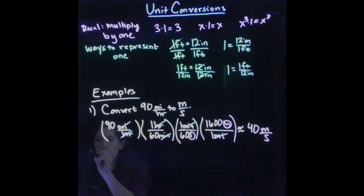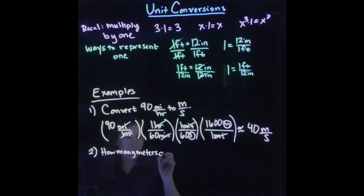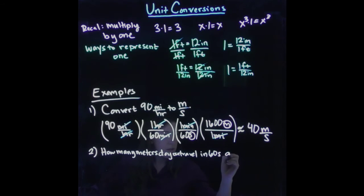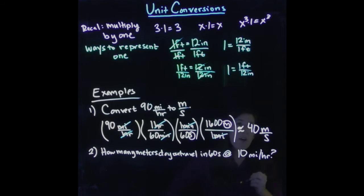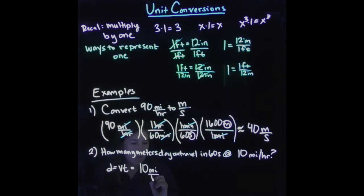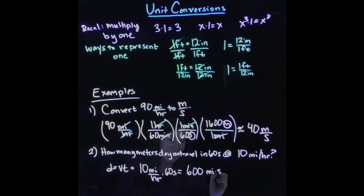So let's do one more example. So let's say your problem statement is how many meters do you travel in 60 seconds at 10 miles per hour. So this is your question. Really, I would recommend right away, you should probably just convert this to SI units, and then everything would work out better. But let's say you didn't do that, you're just sort of blindly powering through.